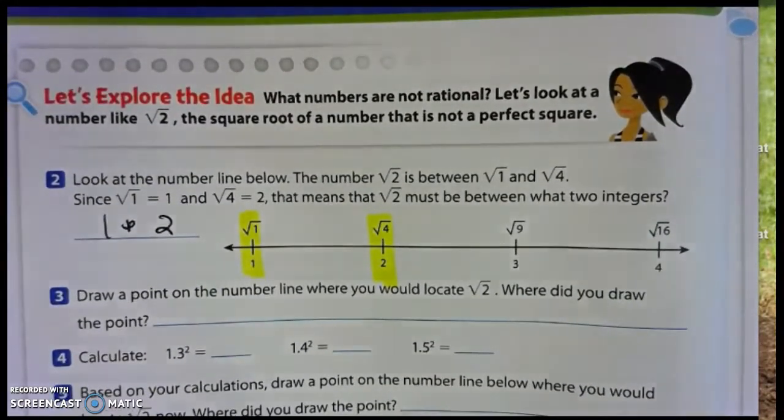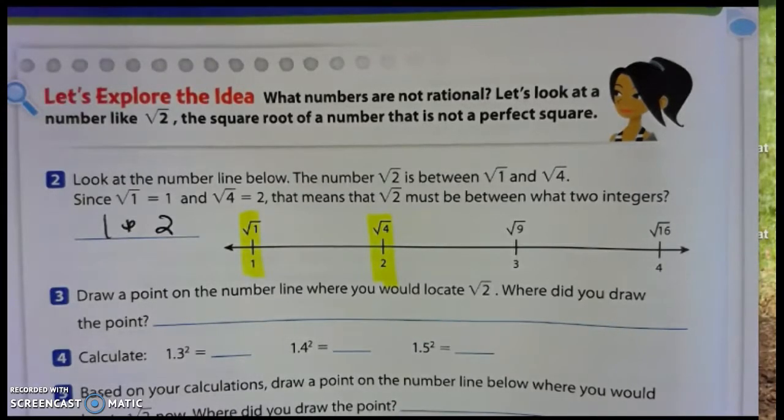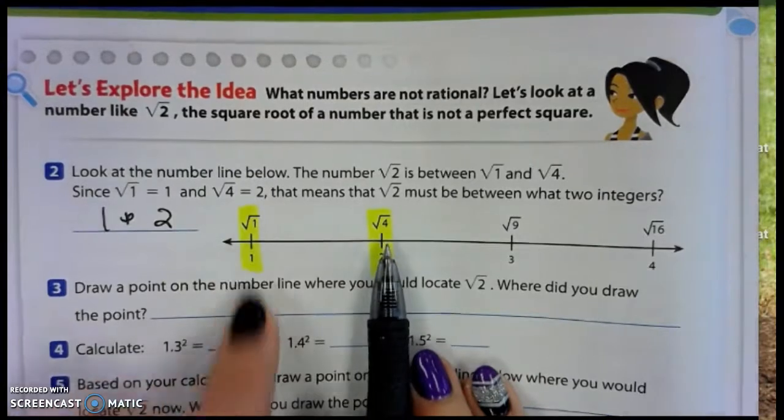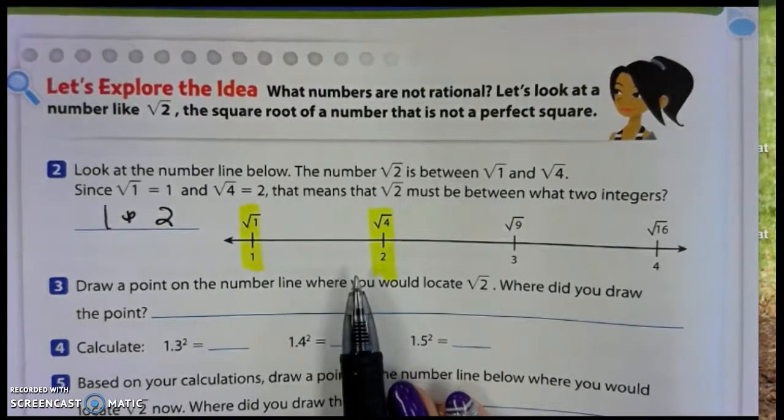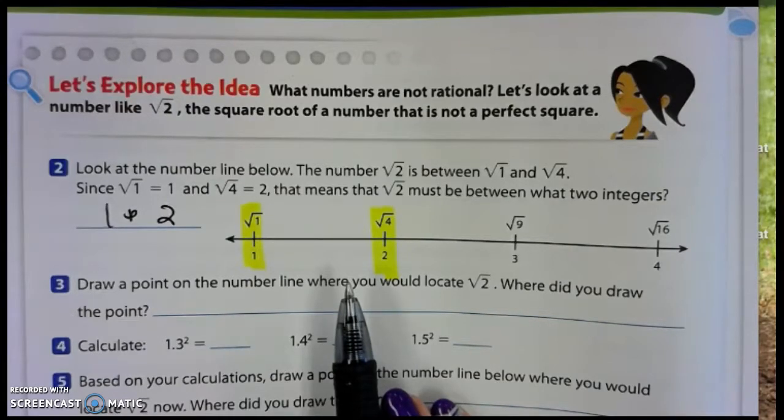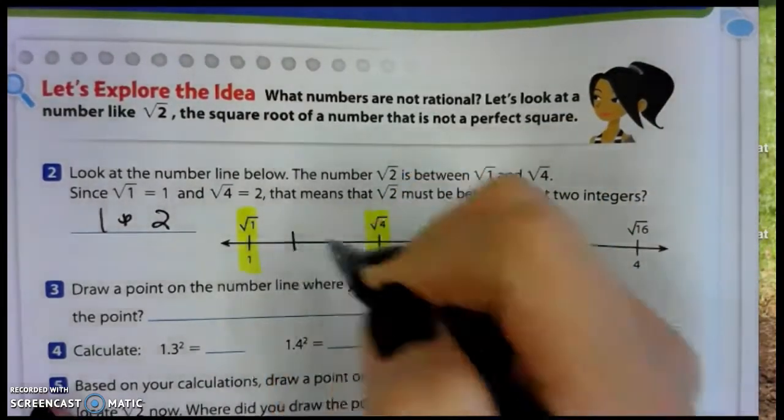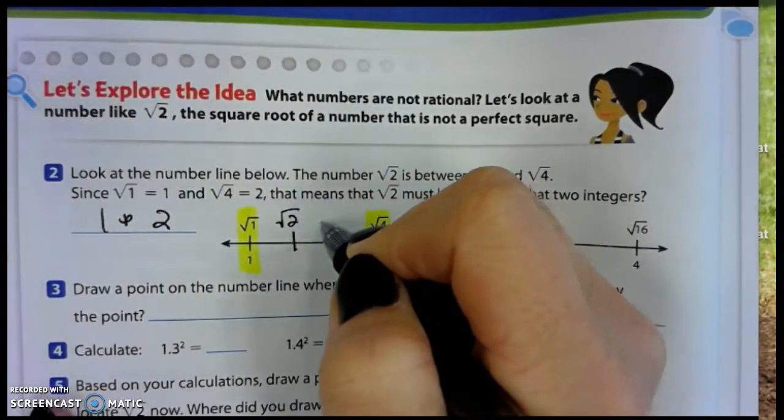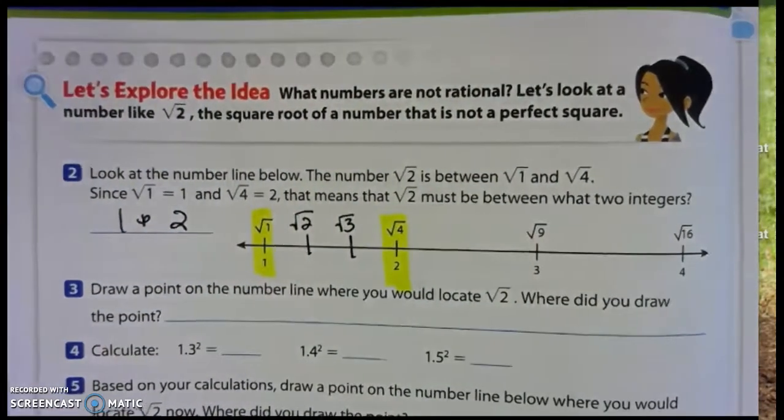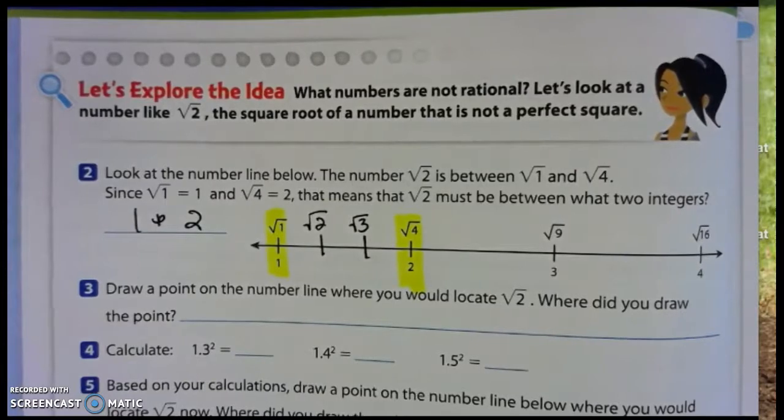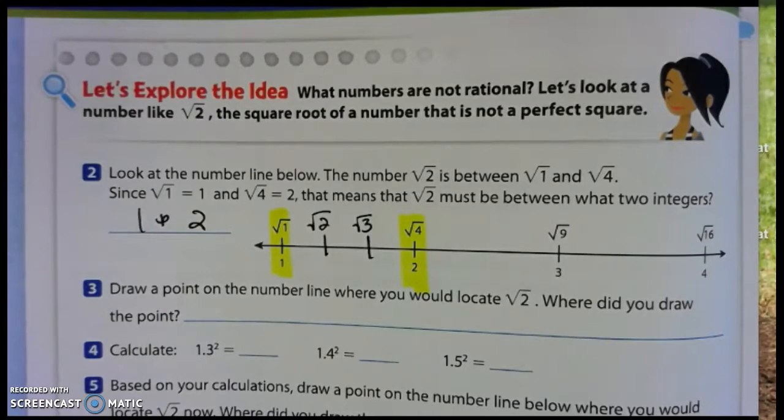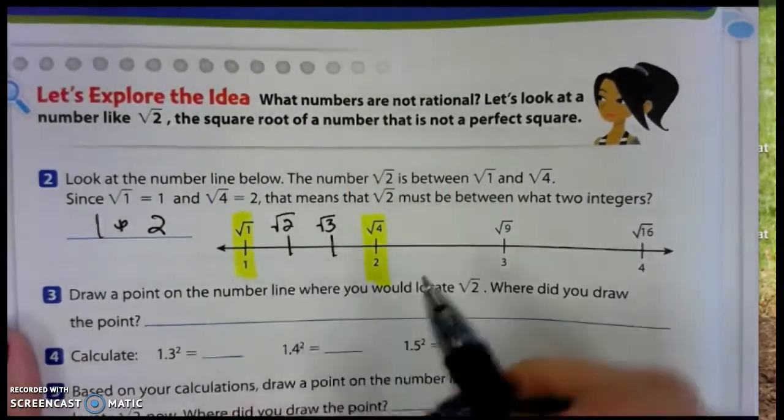Draw a point on the number line where you could locate the square root of 2. Now, if I'm looking for how many numbers fall between the square root of 1 and the square root of 4, you've got the square root of 2 and the square root of 3. There's just two numbers in there. How did I decide that? I just spaced them out evenly. I only had two numbers to fit in there, so I spread them out into thirds and put those numbers there.